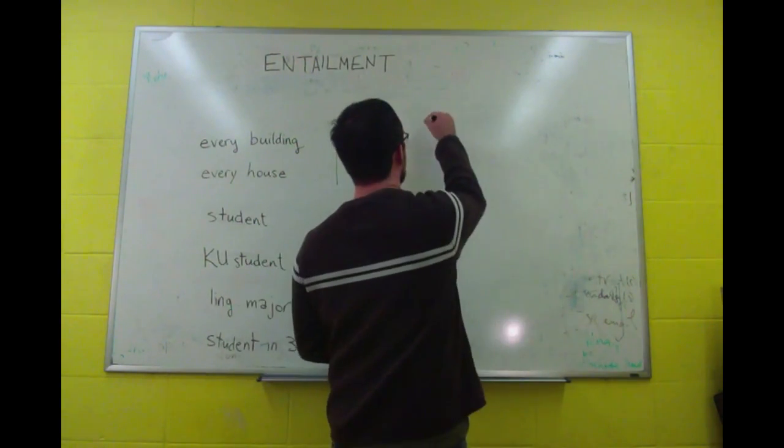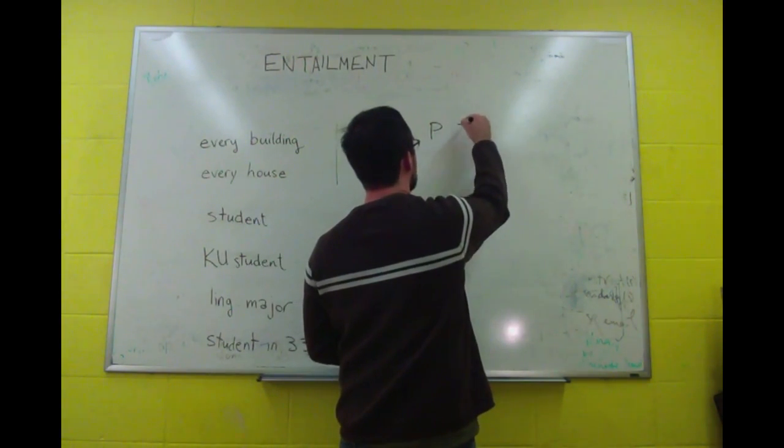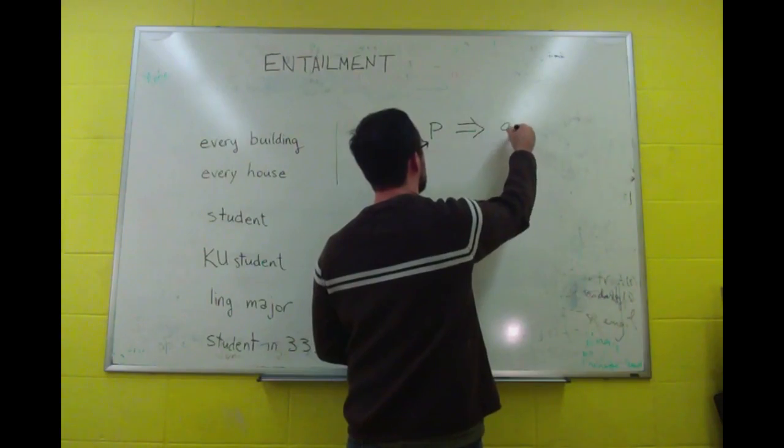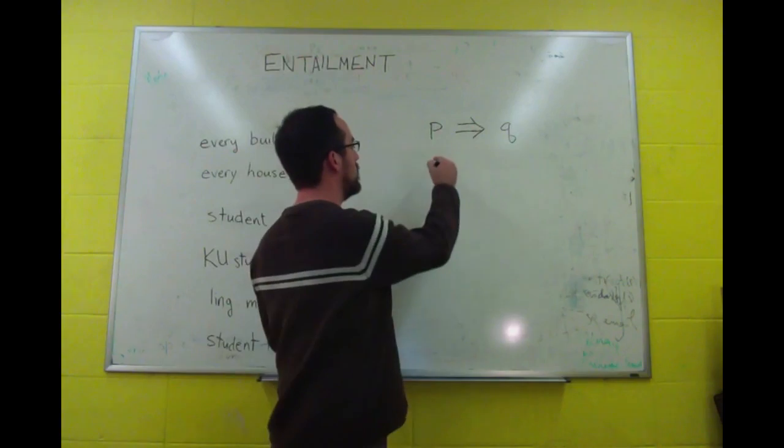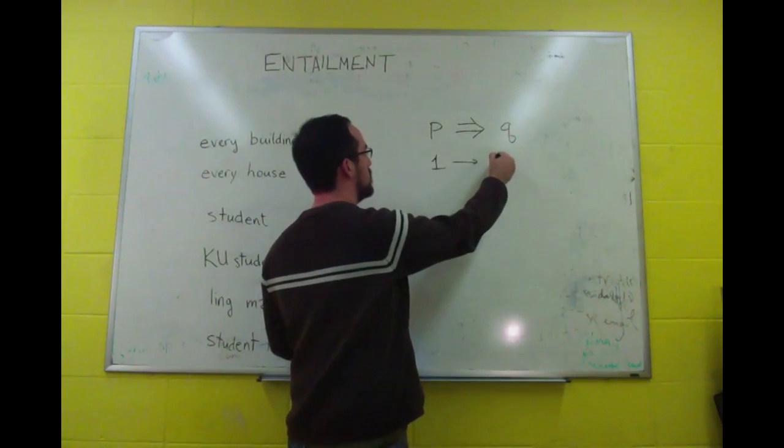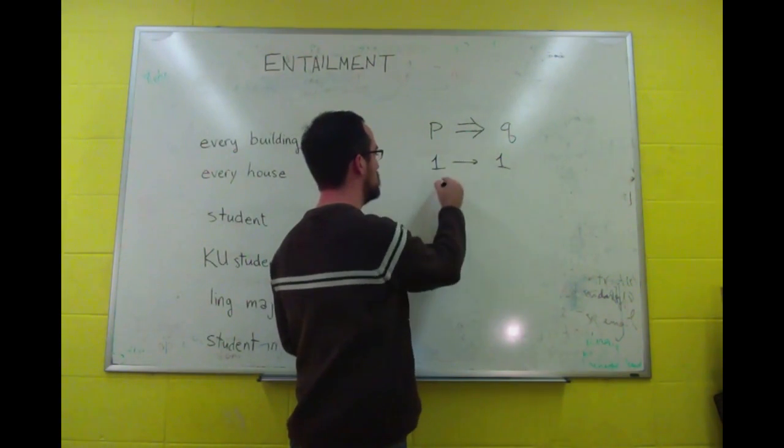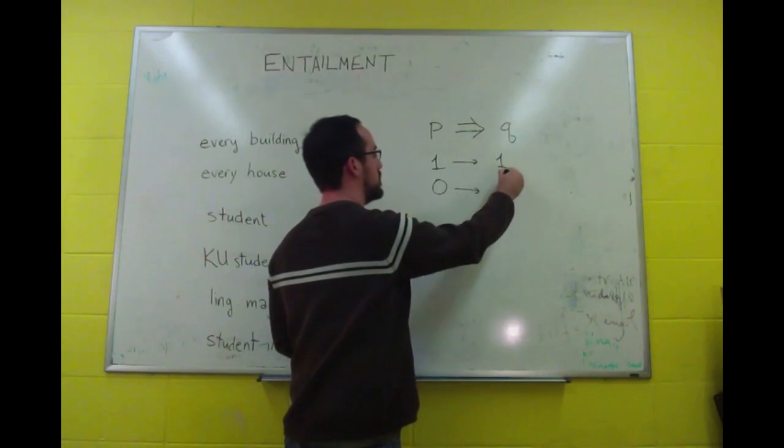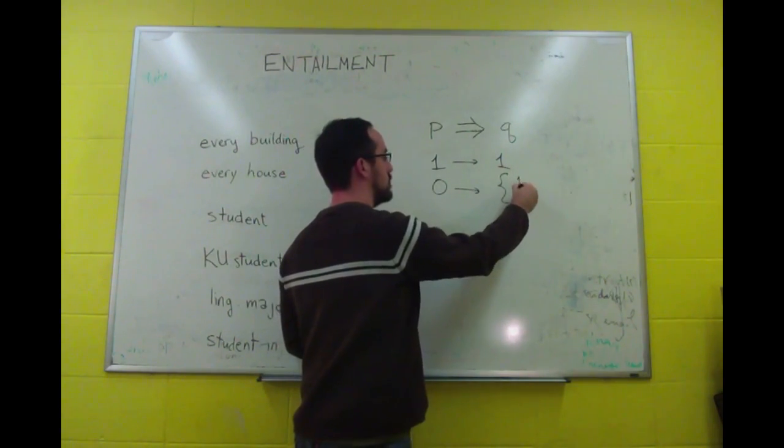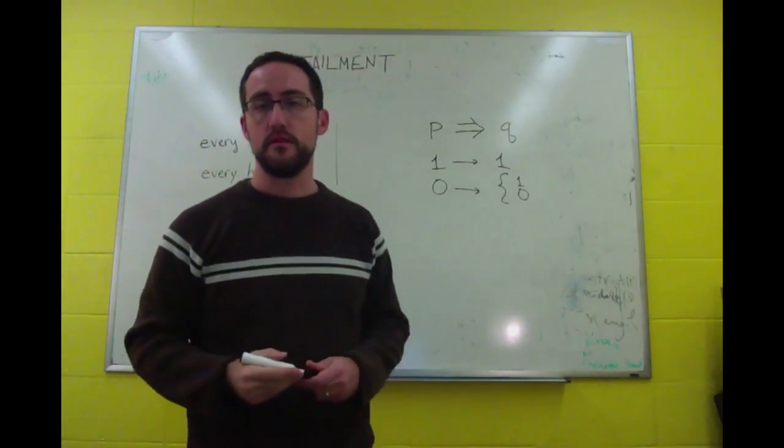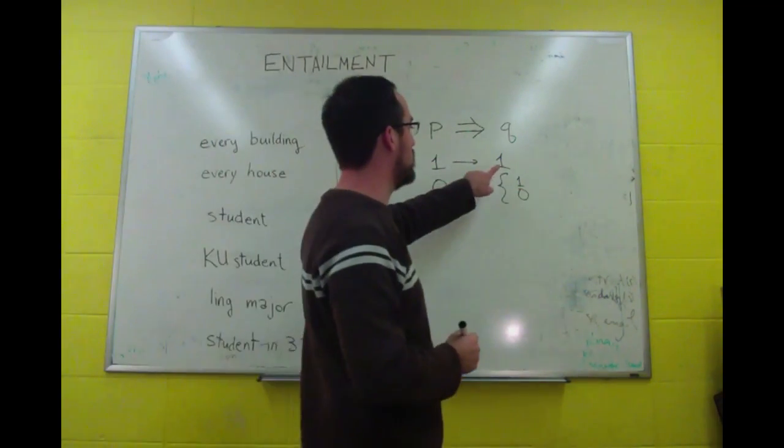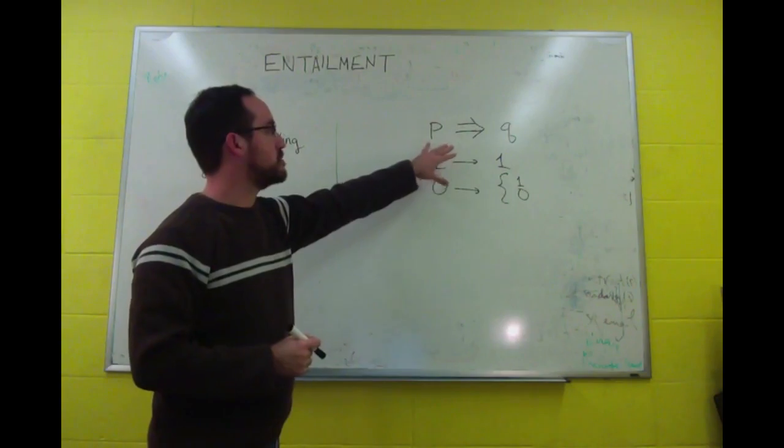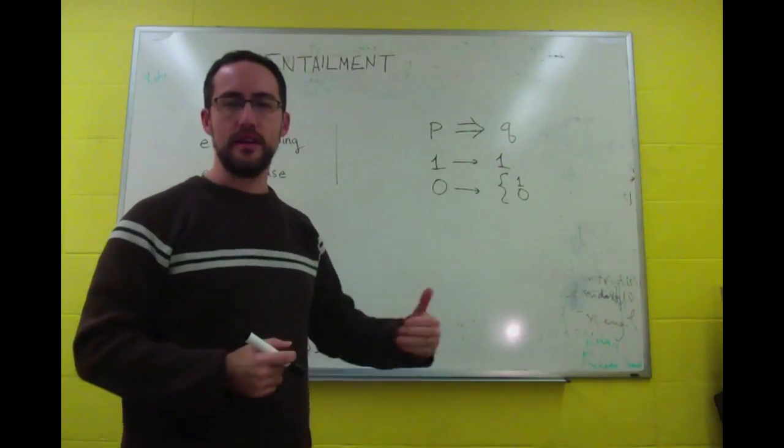So if you take P and Q, we say that P entails Q when whenever P is true, Q is true. And whenever P is false, Q can be whatever it wants. But whenever P is true, Q is going to be true as well. This is the entailment relation.